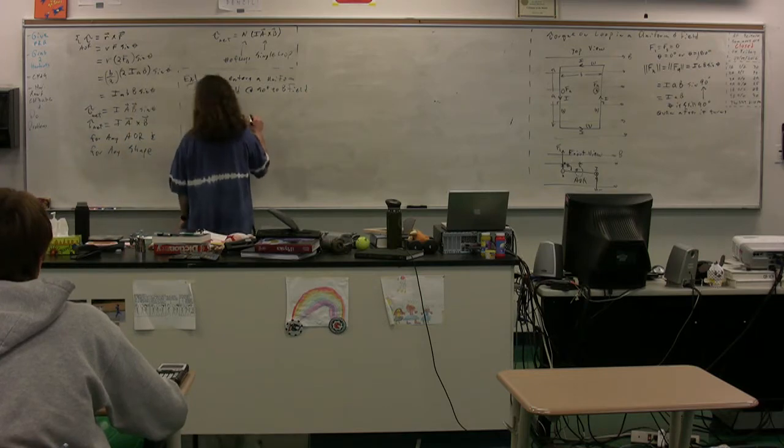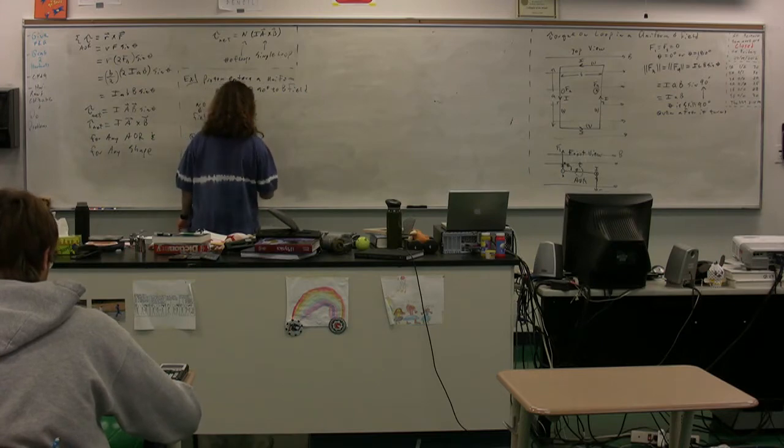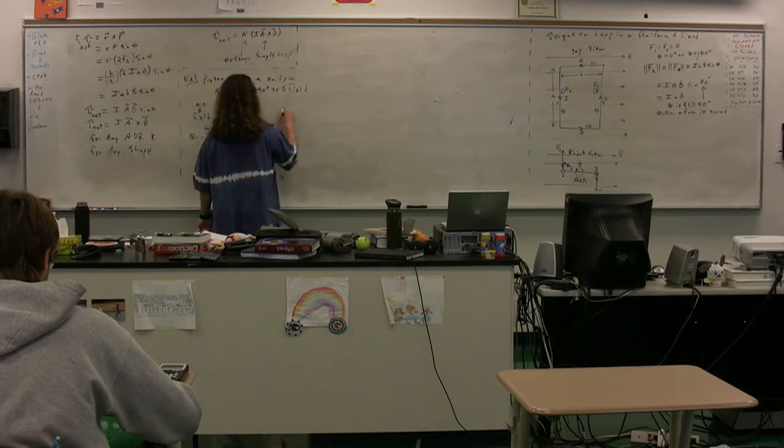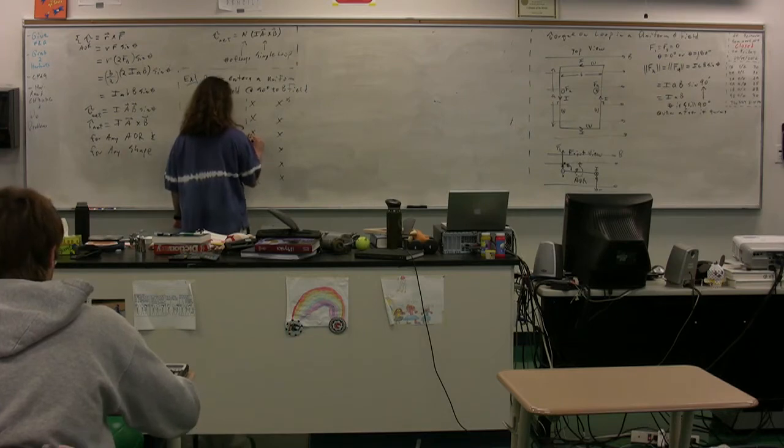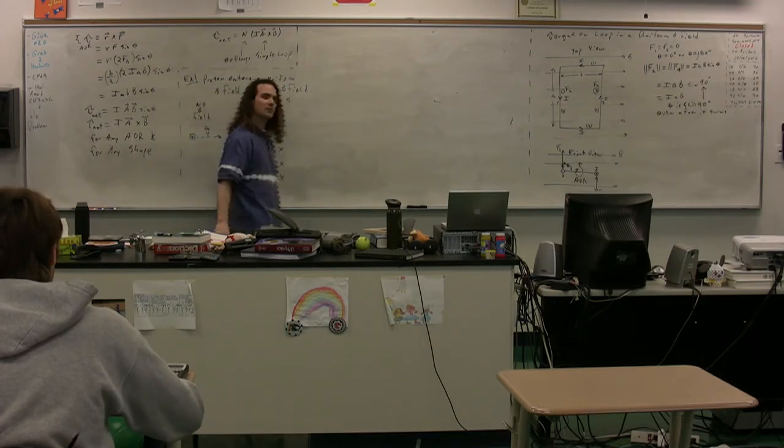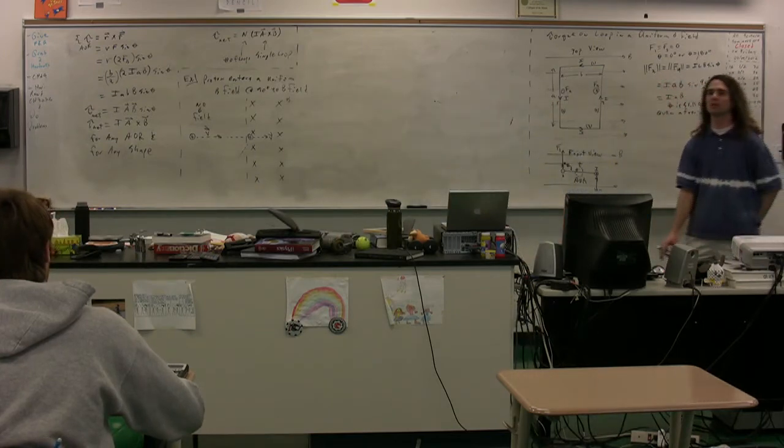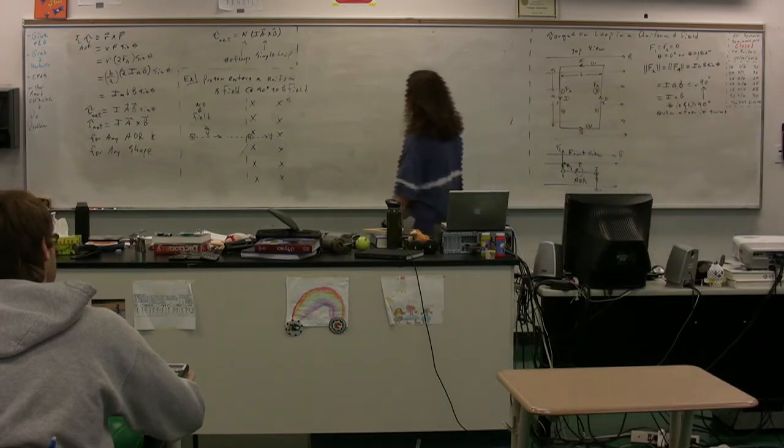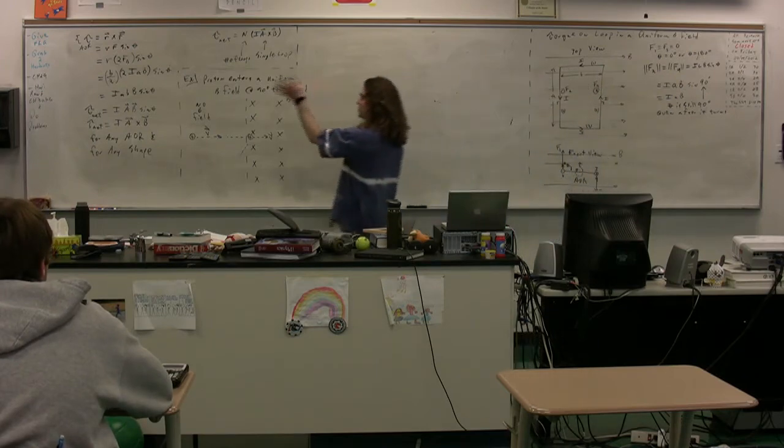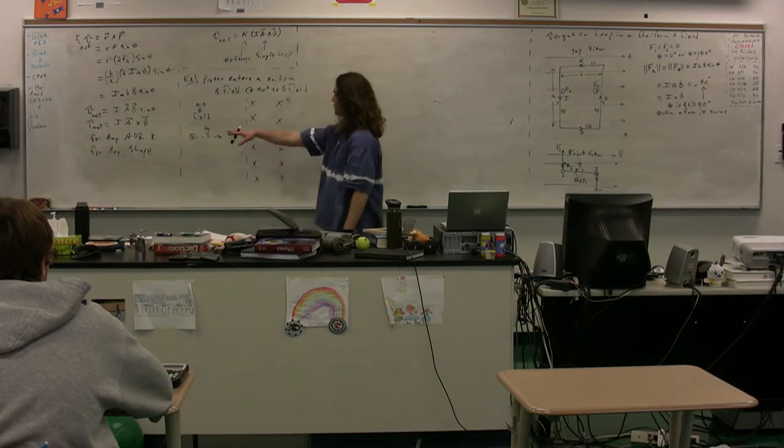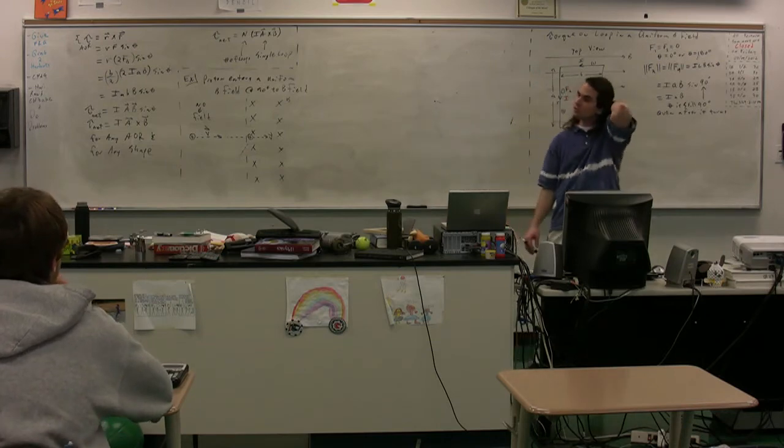And then it's going to enter into a magnetic field which is constant. So it gets to this point and its velocity is to the right. It's moving to the right in an area where there is no magnetic field, so it's clearly just going to move at a constant velocity until it gets to this point. When it enters the constant magnetic field, just describe what happens to the charge.